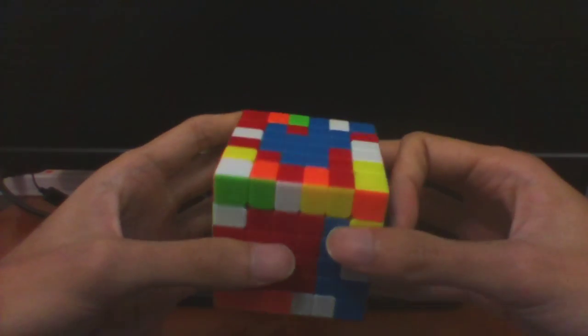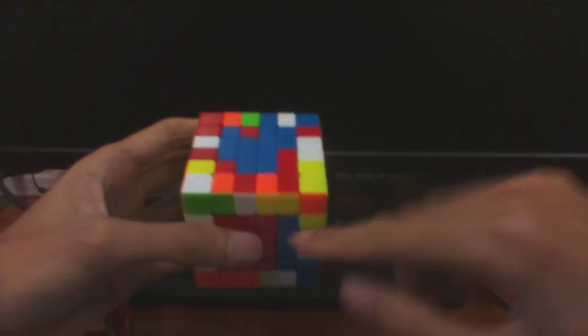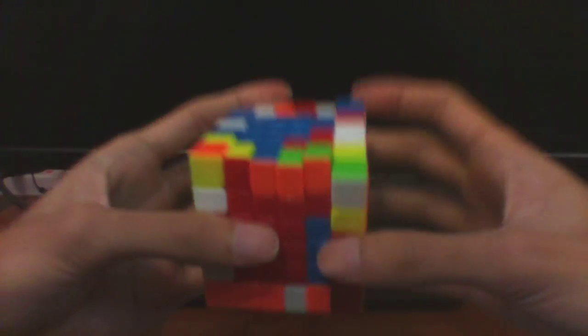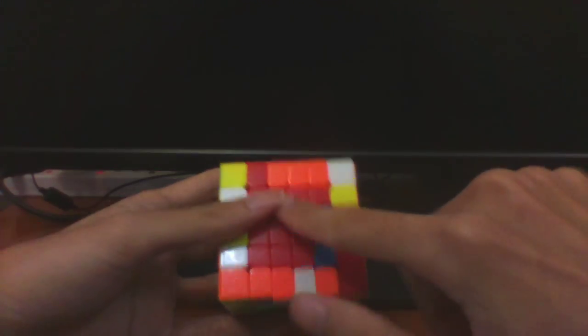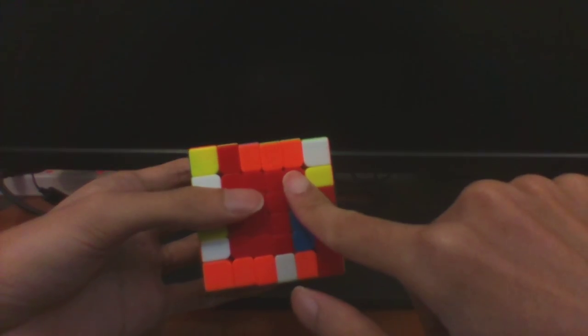For this case, what we do is AUF 2 pieces over the 3rd slot, then RU2R' and then we get this little triangle in this corner in this slot.